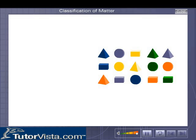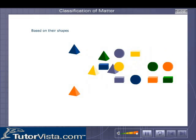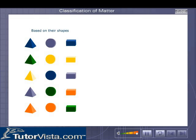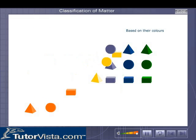Let's try to group the objects shown here. To do so, let's find some similarities. We can group the objects based on their shapes. We can also group the objects based on their colors.